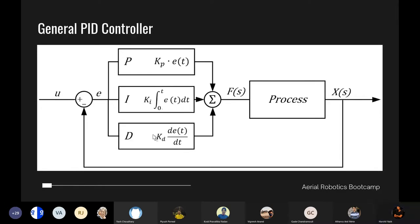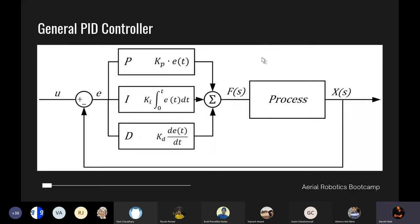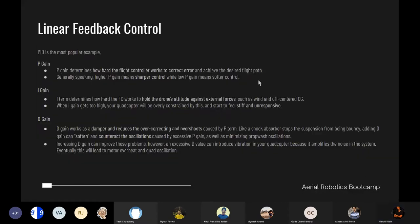The error term is fed into all three controllers simultaneously, and their outputs are added up and passed into the process. Together they form the PID controller. You can apply this PID control to each axis independently — x, y, z, roll, pitch, yaw — to get full control over the drone. This is basically linear feedback control: an input is given, an output is produced, that output is fed back via sensors, and another output is generated.